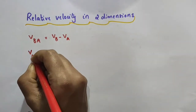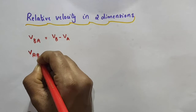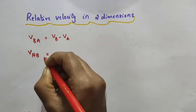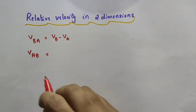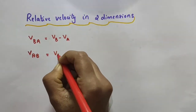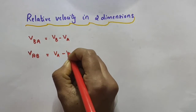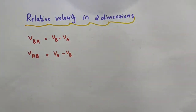Similarly, we got the expression for the velocity of object A with respect to B, or relative to object B, as velocity of object A minus velocity of object B.